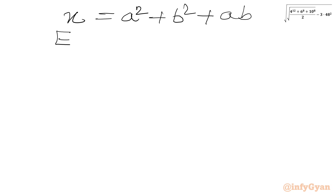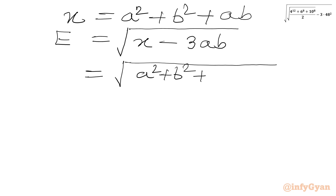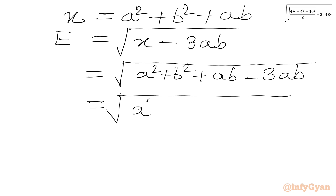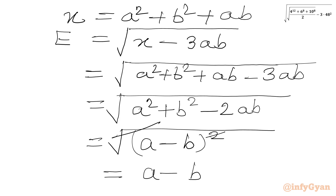Our expression was E equals the square root of (x minus 3AB). Substituting x, we get the square root of (a² plus b² plus ab minus 3ab), which simplifies to the square root of (a² plus b² minus 2ab). This equals the square root of (a minus b) whole square, and applying the square root gives the final answer a minus b.